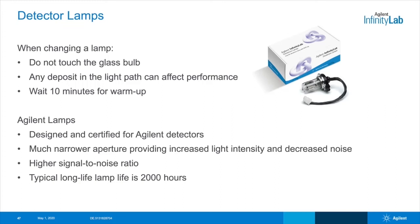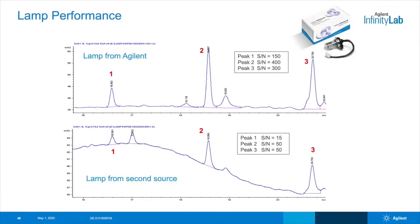Here are a few helpful notes on Agilent UV lamps. They are the only lamps designed and certified for Agilent detectors. They have a much narrower aperture, which provides increased light intensity and decreased noise versus the competition. Agilent long-life lamps can last up to 2,000 hours, and your lamp life can be tracked within your LC system software. When changing a lamp, do not touch the glass bulb, as any deposit in the light path can affect the performance of the lamp. When turning the lamp on, it's best to wait about 10 minutes for the lamp to warm up. Here's an example comparing a lamp from Agilent with a lamp from another supplier — signal-to-noise is significantly better with the Agilent lamp, and baseline drift is a real problem with the competitor lamp.